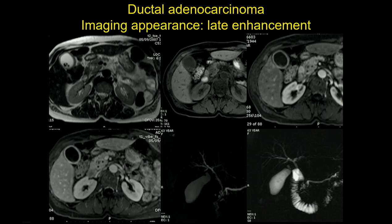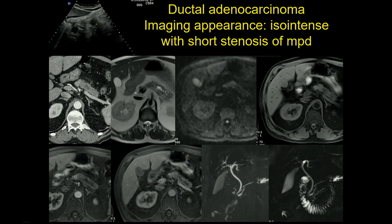We can see here the obstruction of the main pancreatic duct, which does not reverse after injection of secretin. This can be a way to differentiate neoplastic stenosis from non-neoplastic stenosis of the Wirsung duct. The stenosis of the Wirsung duct can be the only way to suspect pancreatic cancer when the lesion is very small. This patient had a hypoechoic lesion, not clearly visible on CT or MRI, but again we see stenosis of the Wirsung duct which does not reverse after secretin.